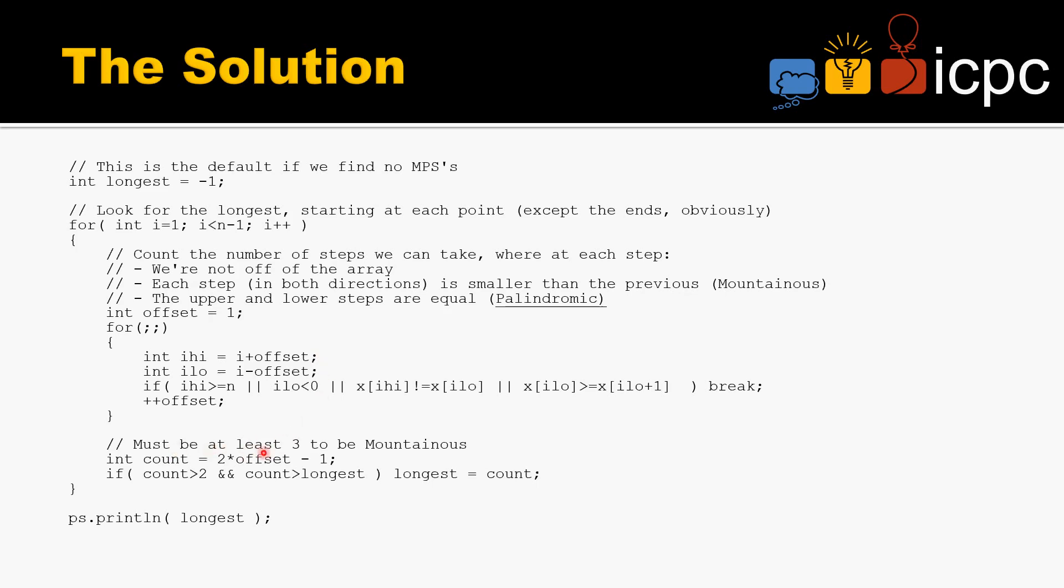It must be at least length 3 to be mountainous. The count is 2 times that offset minus 1. If you consider our previous example...